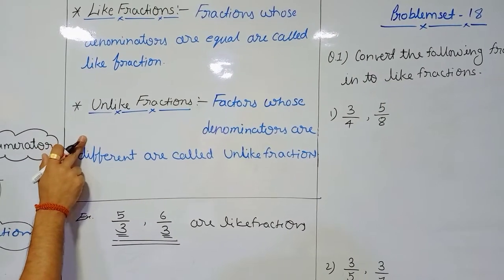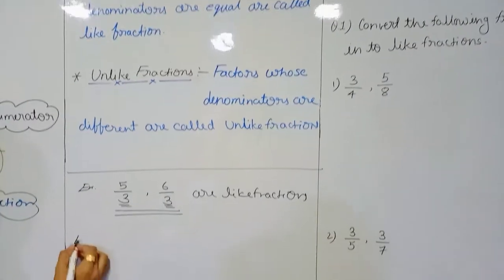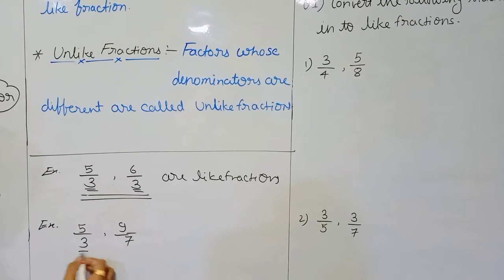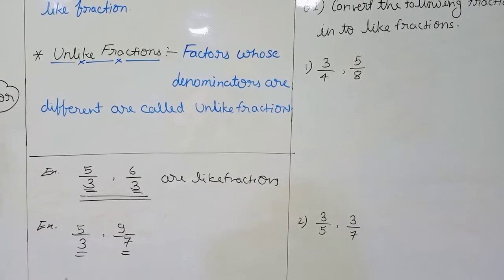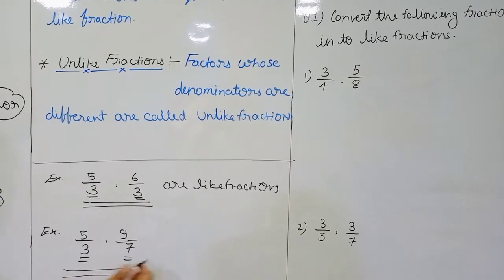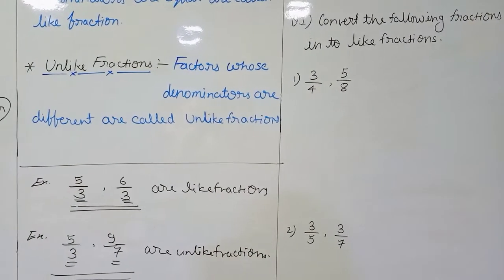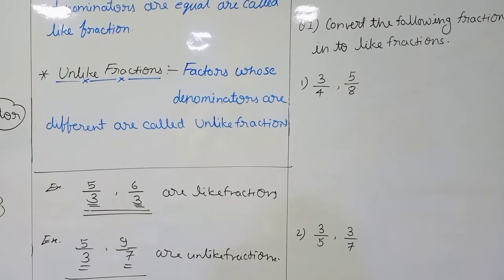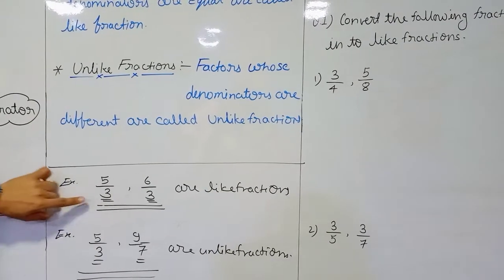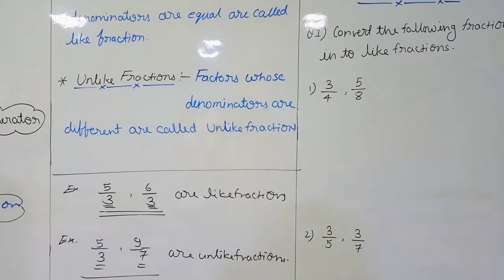Now for unlike fractions — fractions whose denominators are different are called unlike fractions. For example, five upon three and nine upon seven. Here the denominator is three and here the denominator is seven — they are not equal, these two denominators are different, so we say these are unlike fractions. To identify: if denominators are equal, they are like fractions; if different, they are unlike fractions.